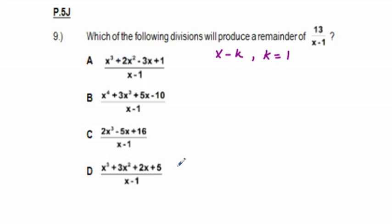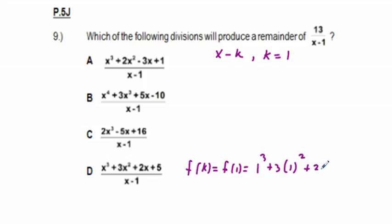For answer choice D, f(1) = 1³ + 3(1²) + 2(1) + 5 = 1 + 3 + 2 + 5 = 11 — that gives a remainder of 11, not correct. For answer choice C, f(1) = 2(1³) - 5(1) + 16 = 2 - 5 + 16 = 13 — that gives remainder 13.